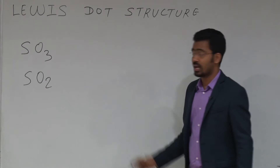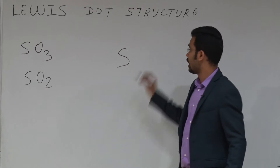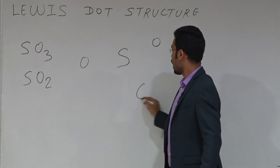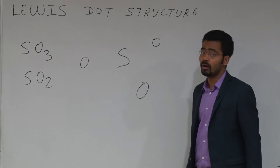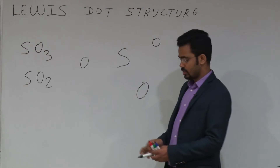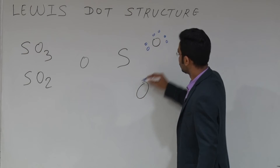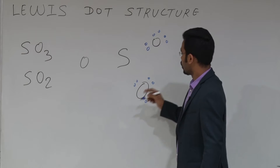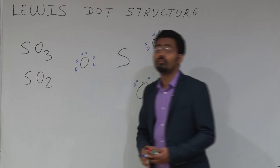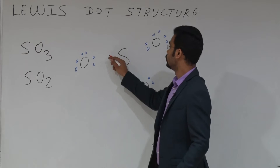First identify the central atom — sulphur is the central atom, then put the remaining atoms symmetrically. Sulphur has 6 valence electrons and oxygen also has 6 valence electrons. This means 2 electrons of oxygen will be shared with sulphur, because oxygen generally forms 2 bonds, and to form 2 bonds sulphur has to share 2 electrons.